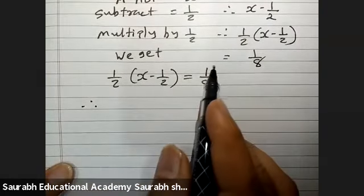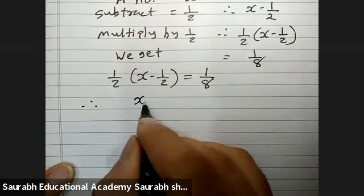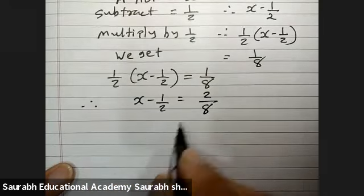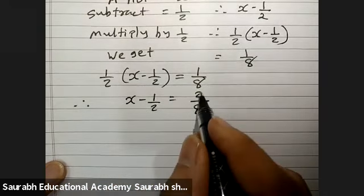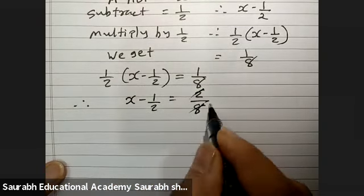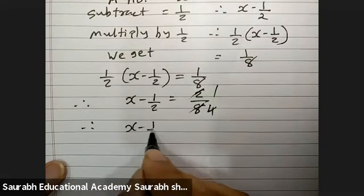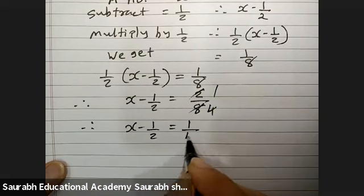Now, take 2 on the other side. So, x minus 1 by 2 equals 2 upon 8. Reduce it, x minus 1 by 2 equals 1 by 4.